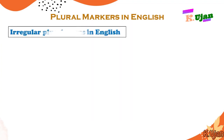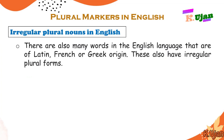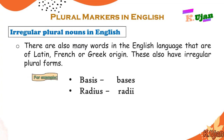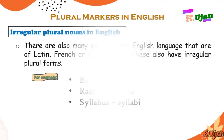We are going to talk about more irregular plural nouns — those which are Latin, French, or Greek origin words. For example: basis/bases, radius/radii, syllabus/syllabi. This is how we form the plural of these singular nouns from classical languages.